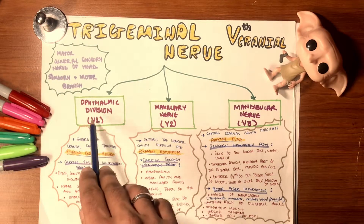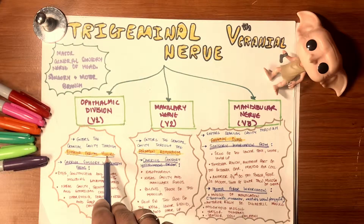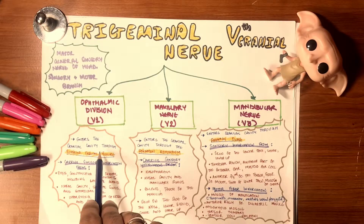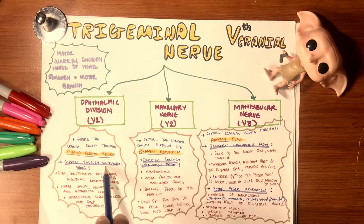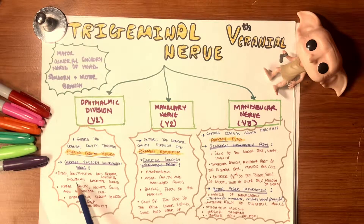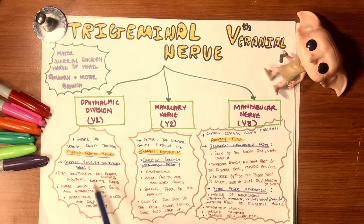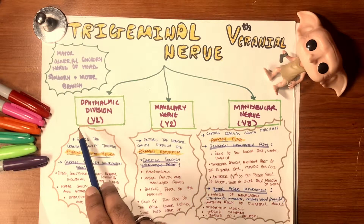The ophthalmic division enters the cranial cavity through the superior orbital fissure — please visit the link below for the previous video on anatomical structures for more detail. It carries sensory innervations from the eyes, conjunctiva, and orbital contents including the lacrimal gland; nasal cavity, frontal sinus, and ethmoidal cells; upper eyelids; dorsum of the nose; and the scalp anteriorly. This covers the upper third of the face.